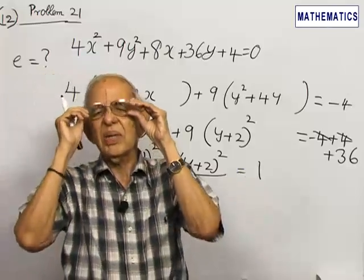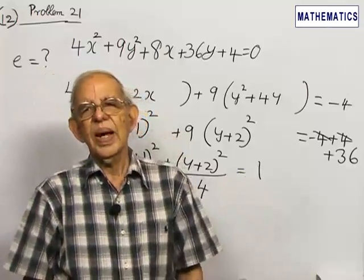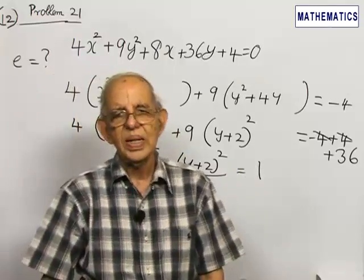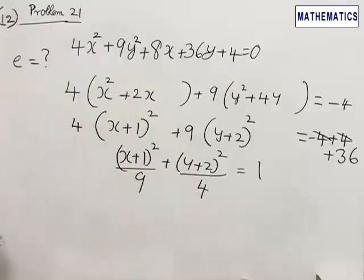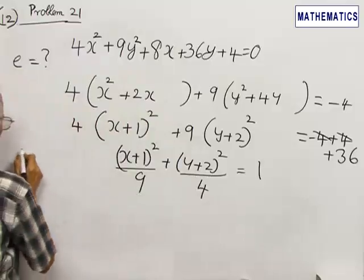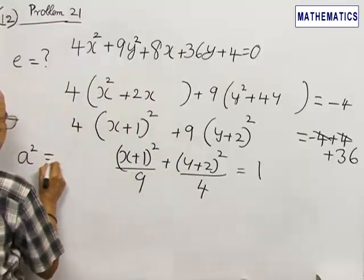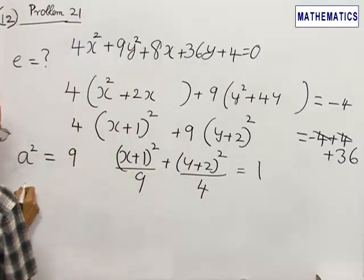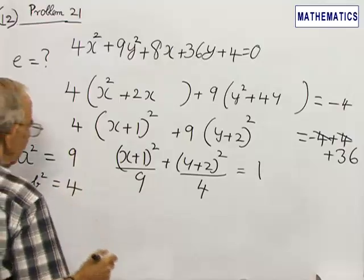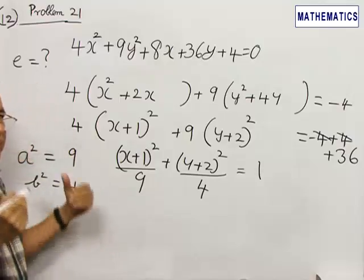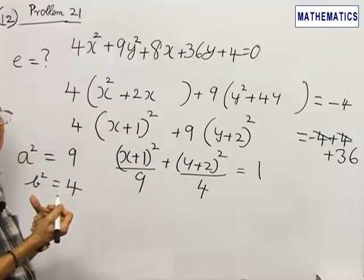So it is in the standard form x²/a² + y²/b² = 1. So that gives me a² = 9, b² = 4.